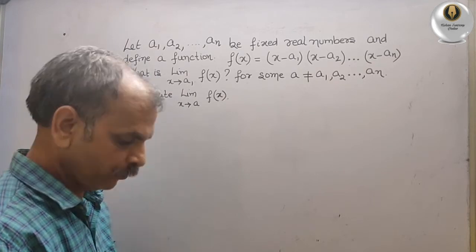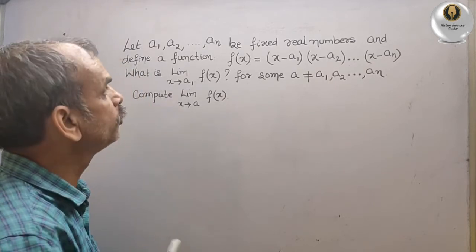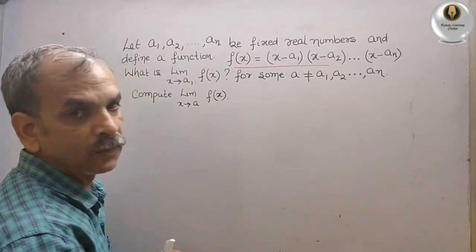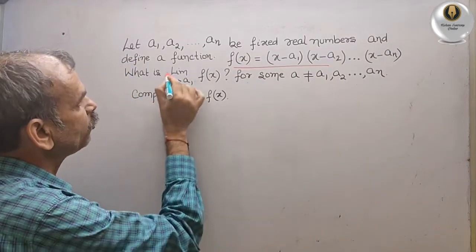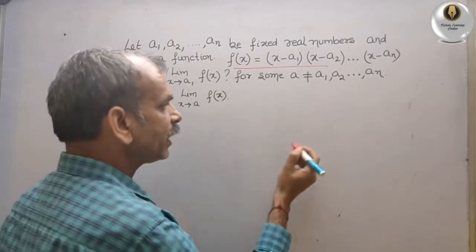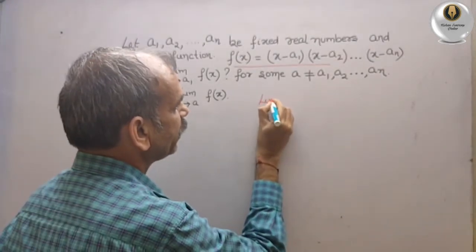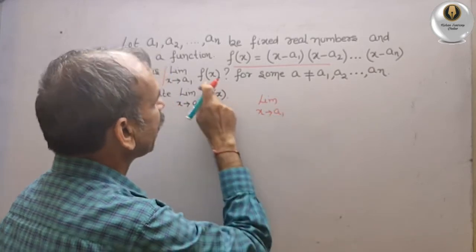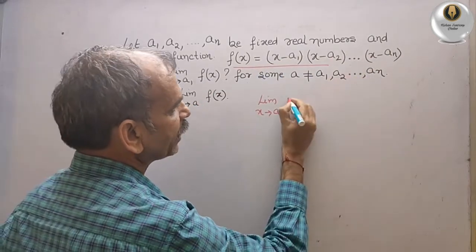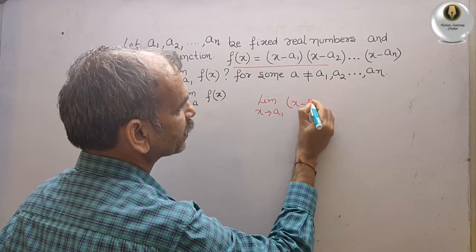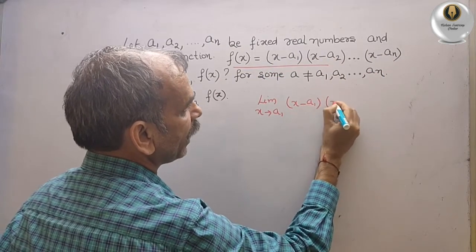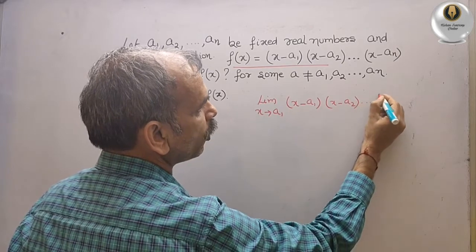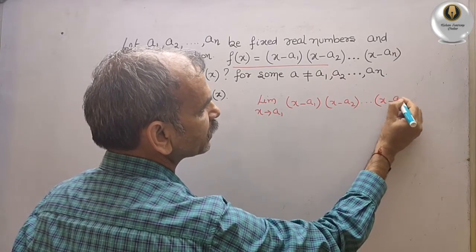Now understand this, what they have given you: this is your f(x) and they have given you limit of that. So what we will write, we will write that only limit x tends to a1 and f(x) is this one. So that is your (x minus a1)(x minus a2) and so on up to (x minus a9).